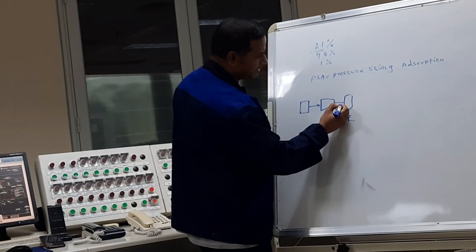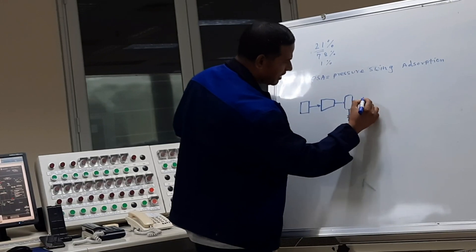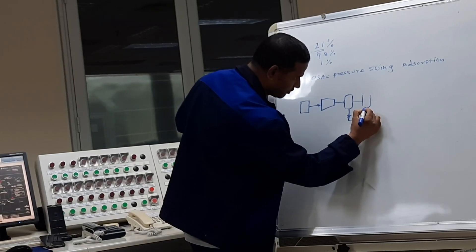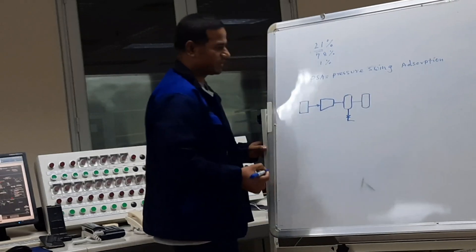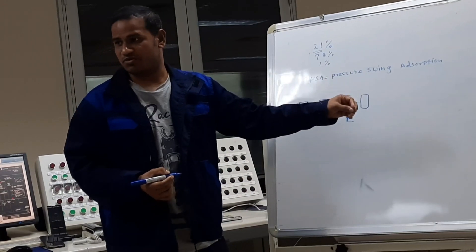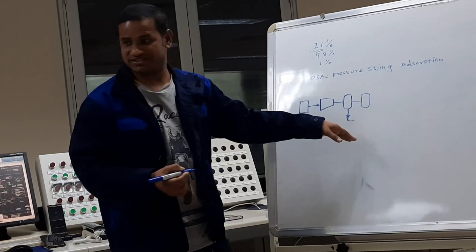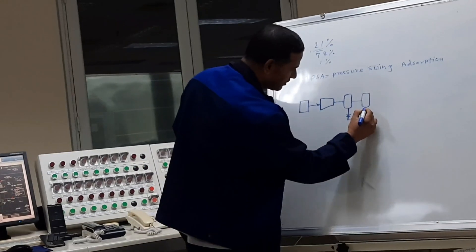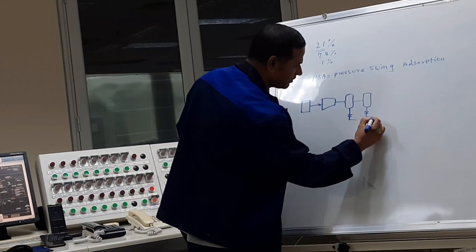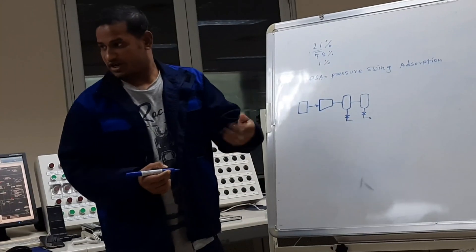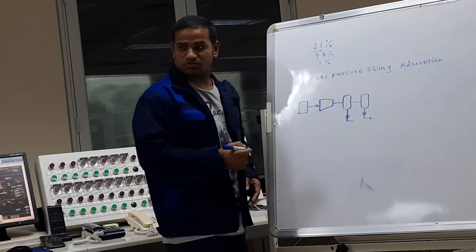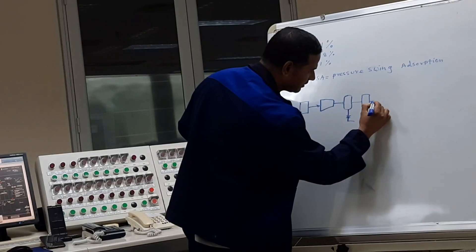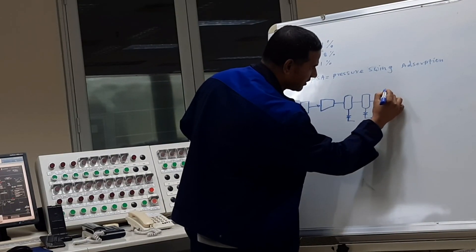After passing through the mist oil eliminator, the air goes to the carbon filter. The carbon filter is available on the local side. By this filter, if some carbon or carbon dioxide remains in the air, it will pass through the condensate trap. This also has one condensate trap. From there it passes through the aero-spirit filter, and then it goes to the air buffer tank.